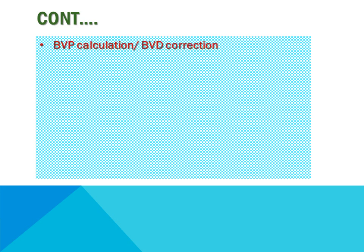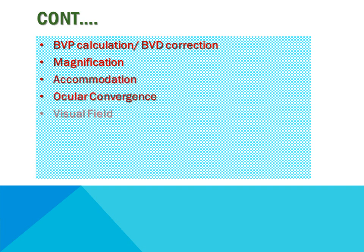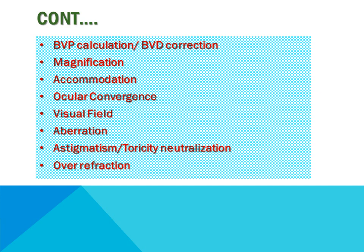The various aspects of contact lens optical properties we are going to discuss today are: BVP calculation or back vertex distance correction; magnification; accommodation; ocular convergence; visual field; aberration; astigmatism or toricity neutralization; and over refraction.